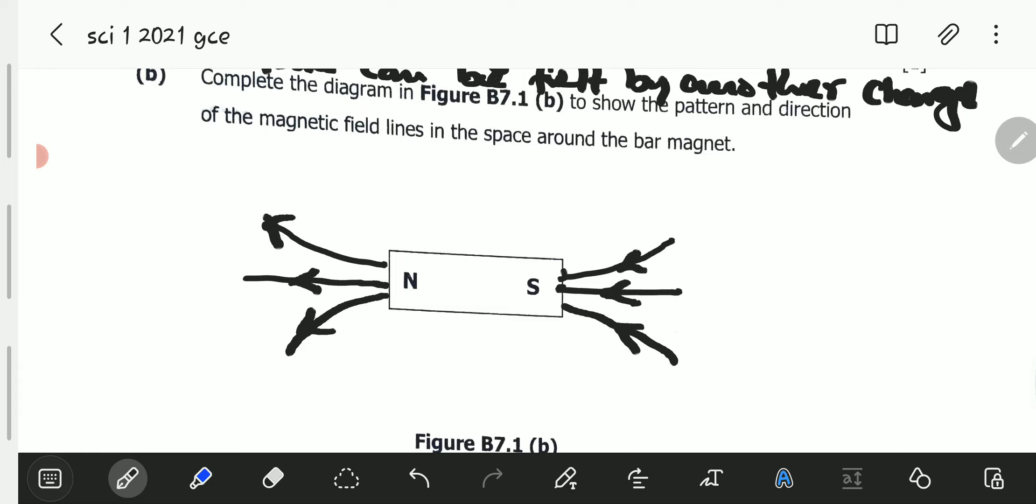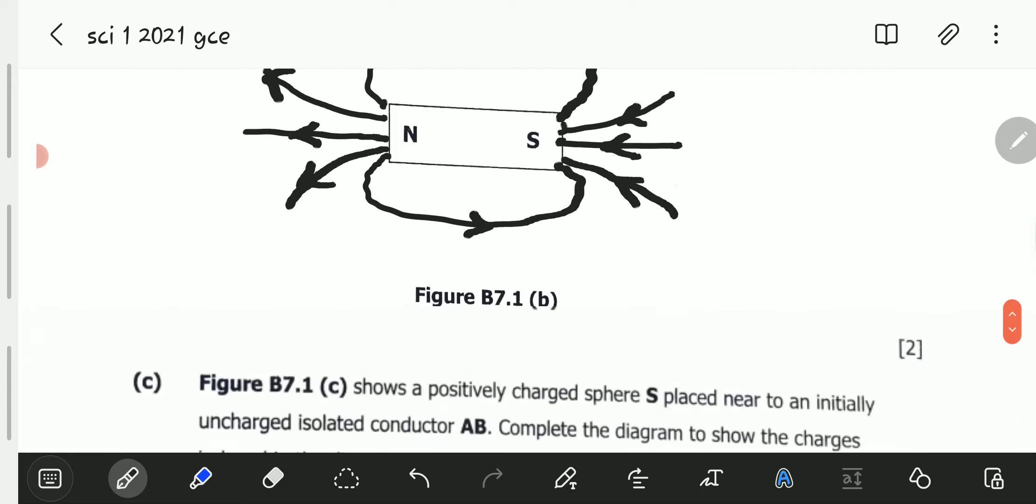So you will have something like that, and also something like that. Then there will be those that will come like that. So that is the diagram. The magnetic field lines are coming out from the north and they are entering the magnet back on the south pole. They never cross each other's paths. So that is how the diagram is supposed to be.